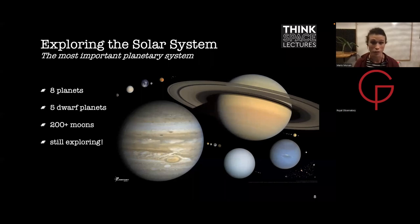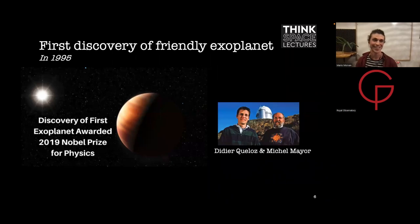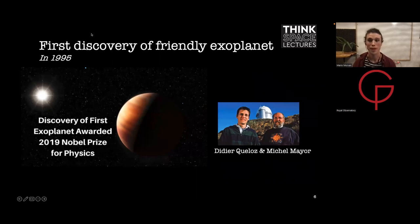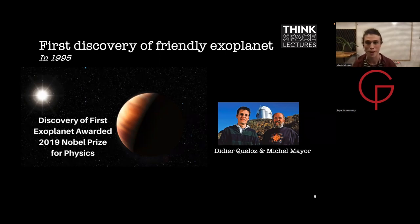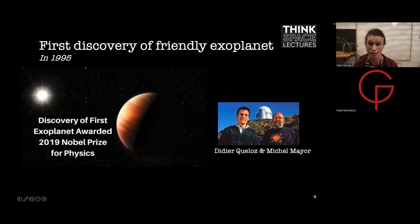It's only recently that we have discovered other planetary systems. It was in 1995 that the first 'friendly' exoplanet was discovered — friendly because it orbits a star like our sun, not a fast-rotating, highly magnetized pulsating star as was found a few years previously. The two main scientists behind this discovery of exoplanet 51 Peg b, Michel Mayor and Didier Queloz, were awarded the Nobel Prize in Physics in 2019. This marked what is considered the true beginning of exoplanet sciences, a bit less than 30 years ago.